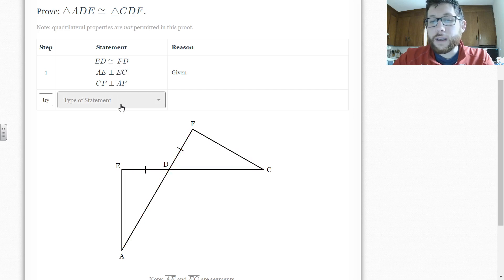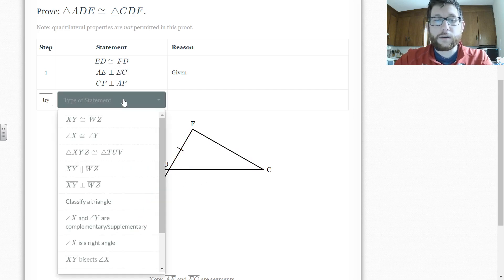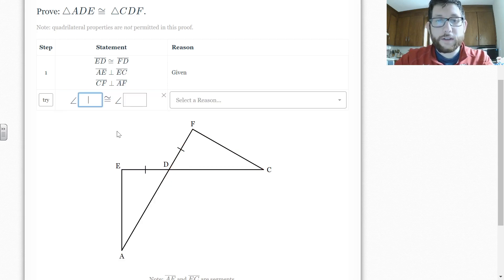So if we're looking at this particular problem, we might notice that there's a vertical angle here. And so we would choose that two angles are equal and we type in our angle letters, EDA.